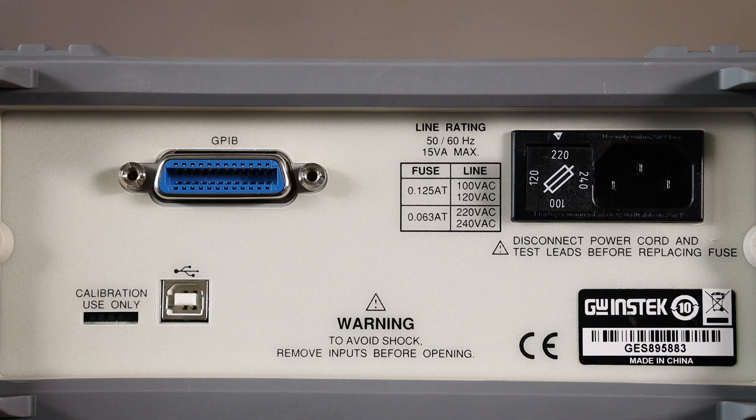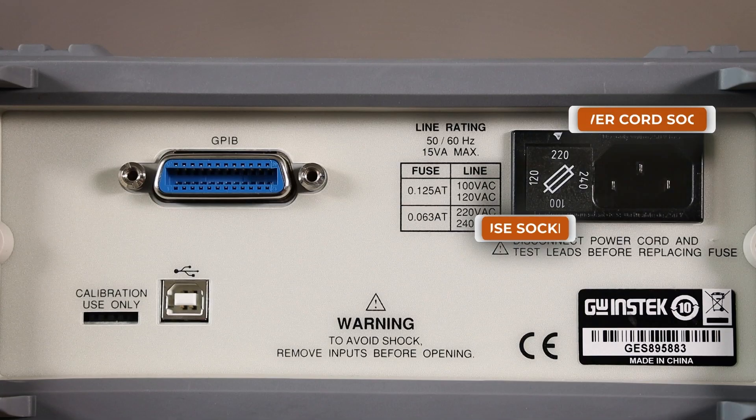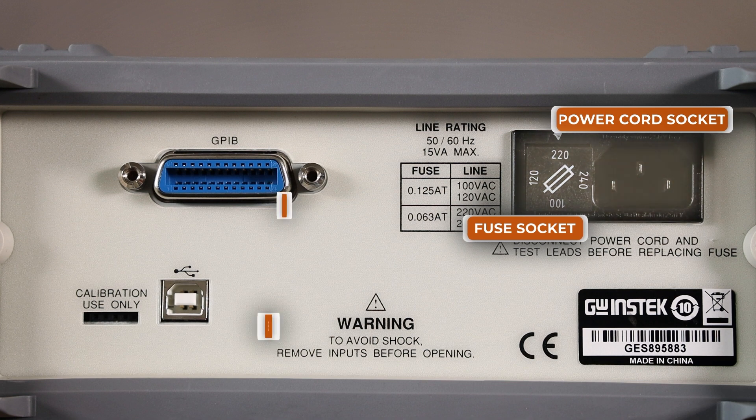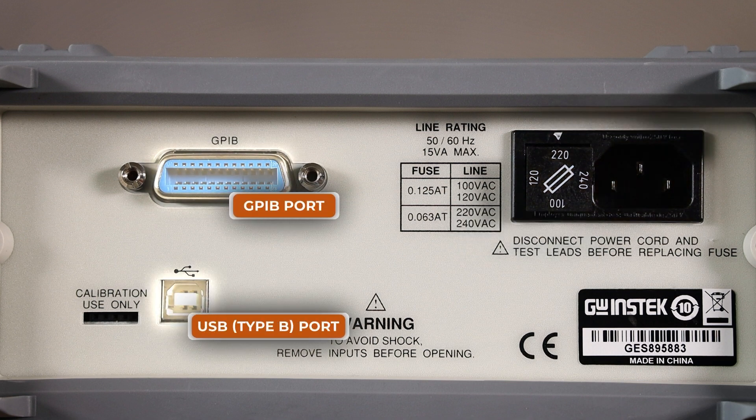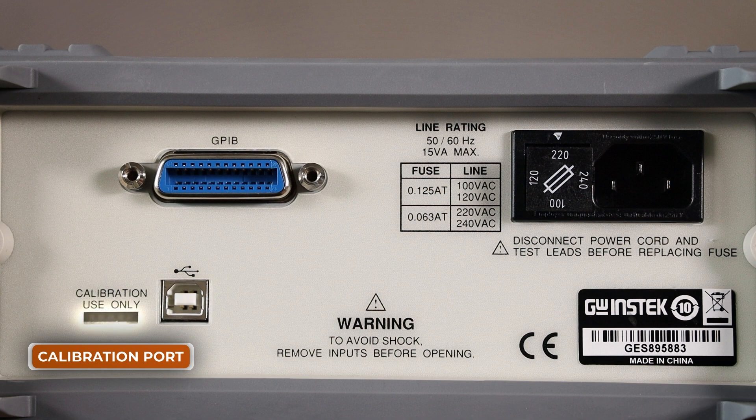At the rear panel, the GDM8342 has a fuse and power cord socket, USB-B and GPIB ports for remote control, and a calibration port.